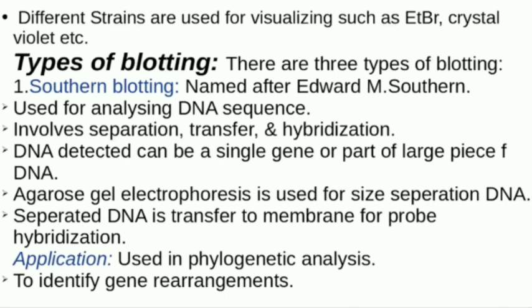Next, we are going to discuss about types of blotting. We have three types of blotting: Southern blotting, Western blotting, and Northern blotting. We have three macromolecules: DNA, protein, and RNA. These are different methods to separate them.